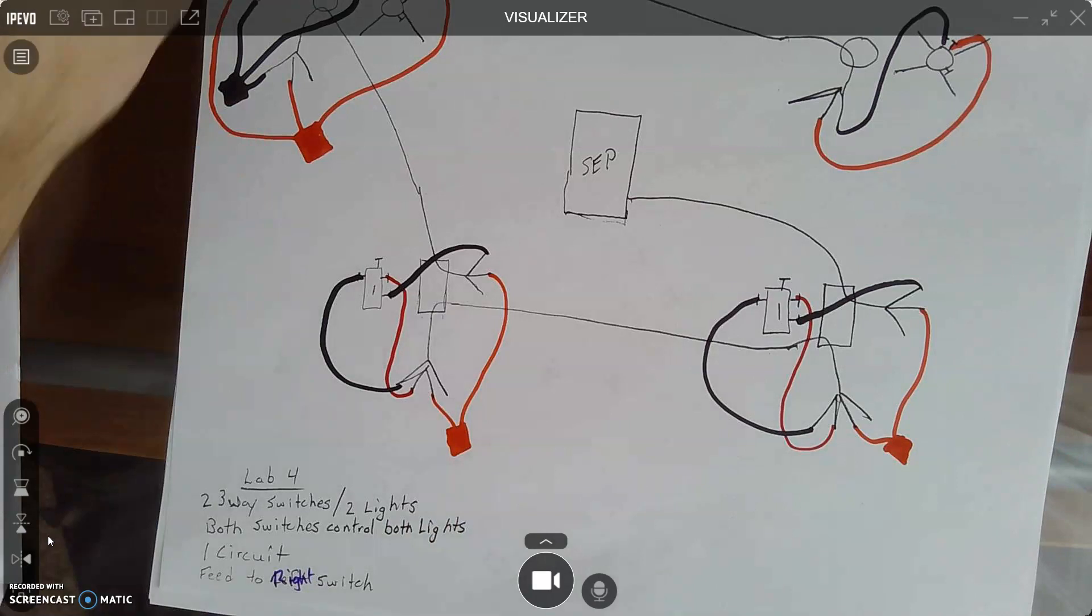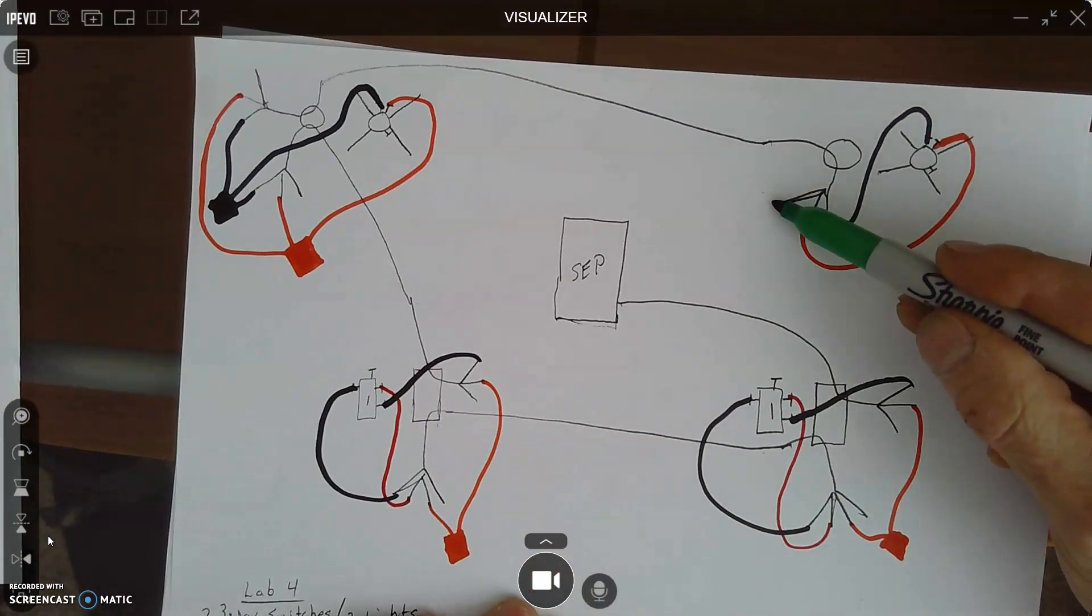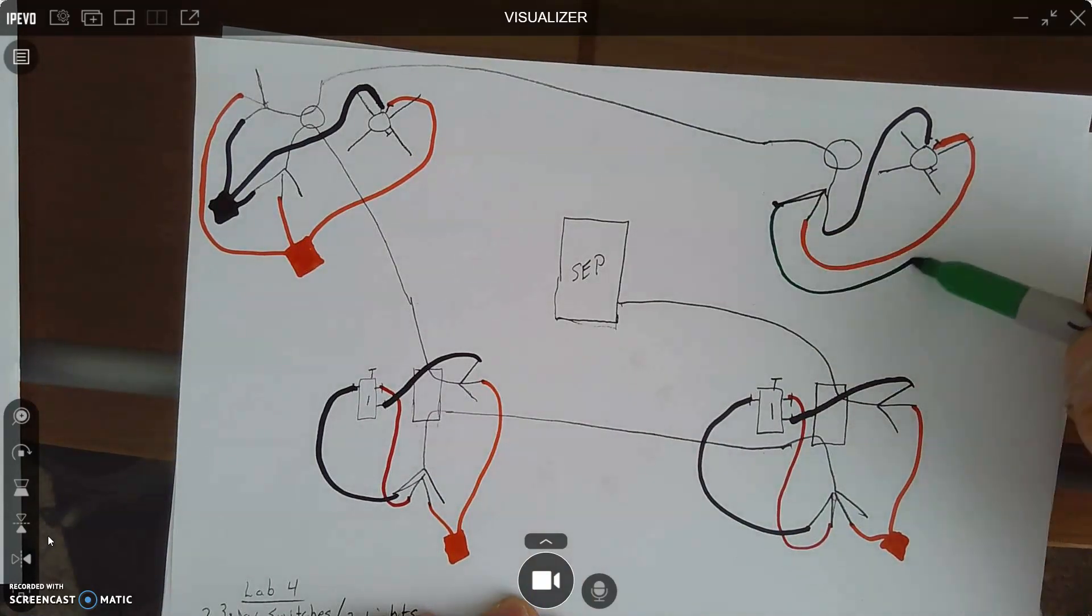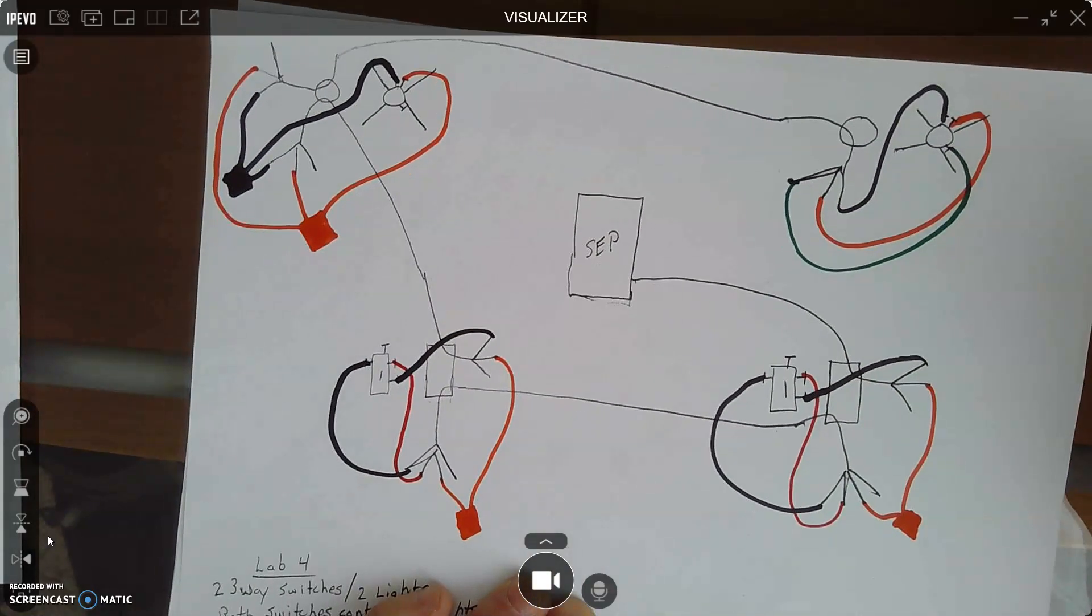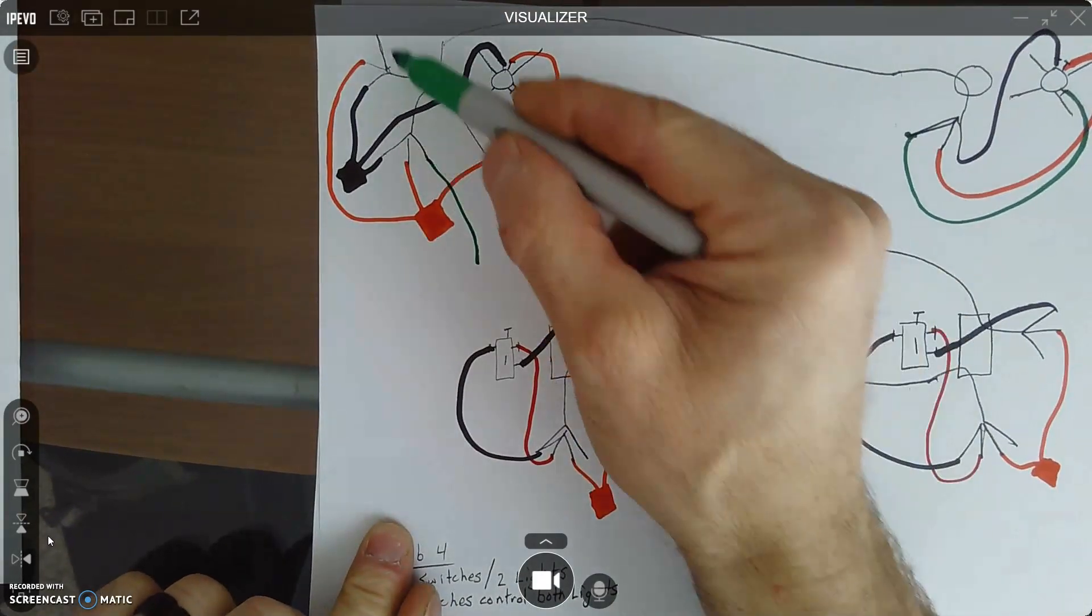It's going to be the same for our ground. Our ground is just going to come, I'm going to come around here into my ground. That's pretty simple. Over here, again, we hook our grounds together.